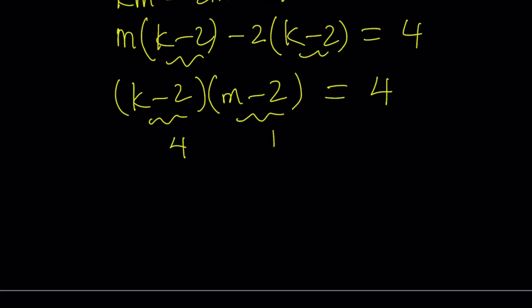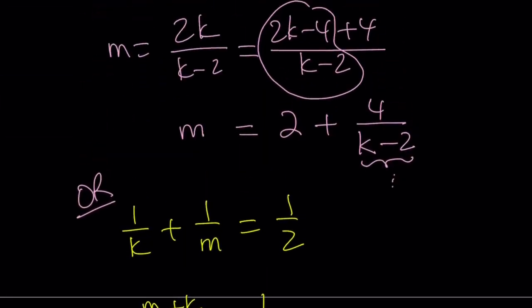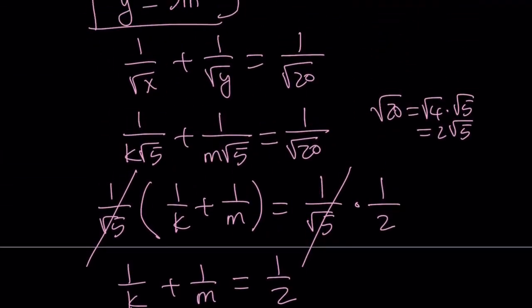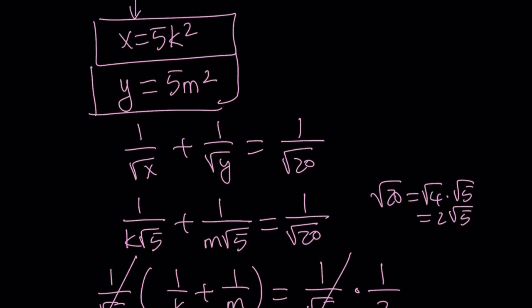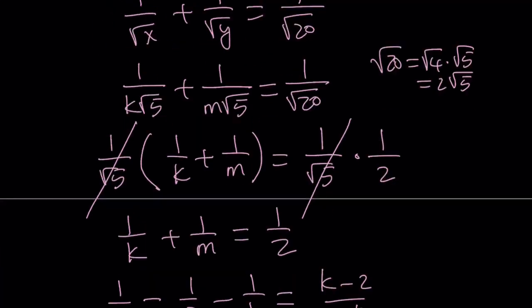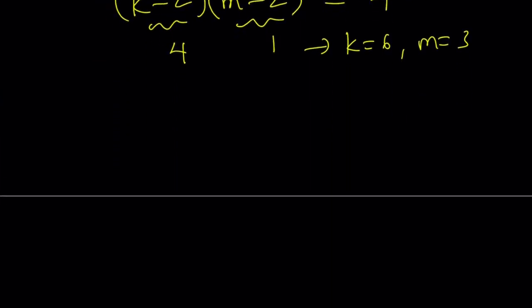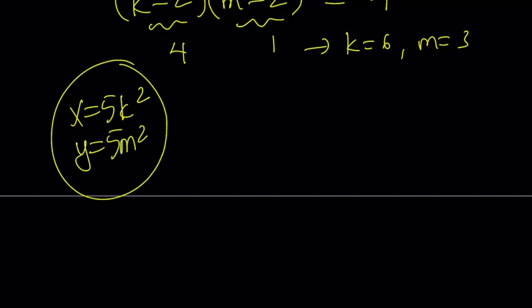4, 1 is a possibility and this gives us k equals 6 and m equals 3. But let's go back to x and y. We were able to write x as 5k squared and y as 5m squared. Let me copy that here. x equals 5k squared and y equals 5m squared.